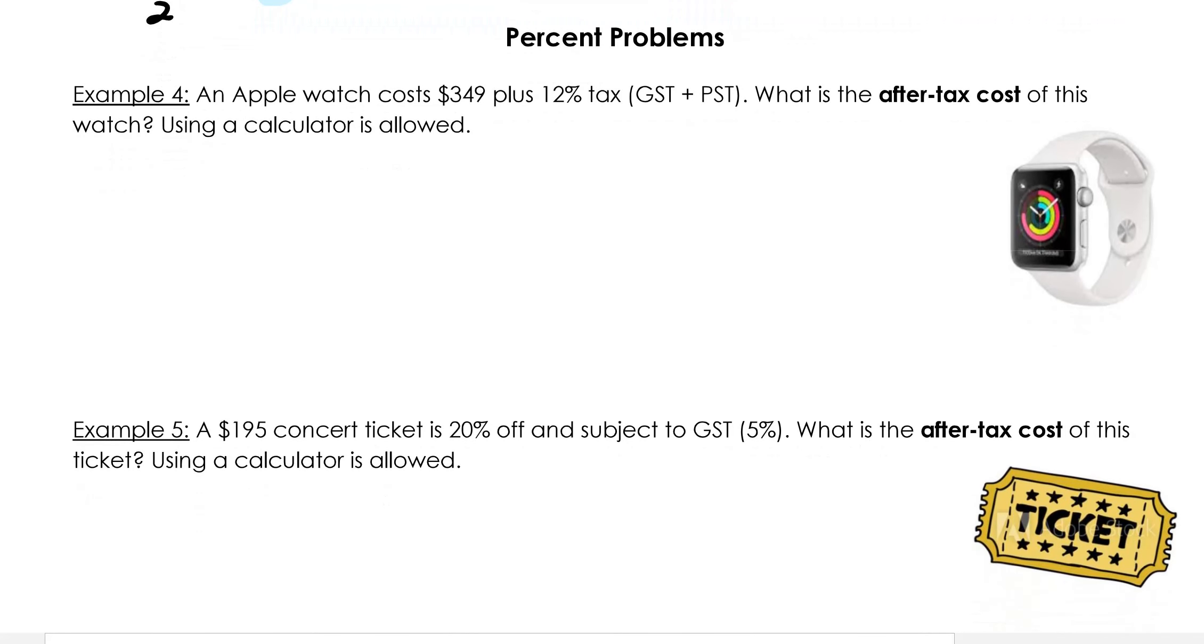This is a useful skill which can be applied in a number of real-world problems. Let's try these two questions together. An Apple watch costs $349 plus 12% tax, your 5% GST plus your 7% PST. What is the after-tax cost of this watch? Using a calculator is allowed. There's two ways to solve a problem like this. If you think you know how to do it, go ahead and pause the video here. Otherwise, let's go through this example together. If we determine 12% of $349, this is going to give us the tax on the watch. 12% of 349 is 0.12 times 349. This is $41.88. We can then go and add that tax back to the original cost of the watch.